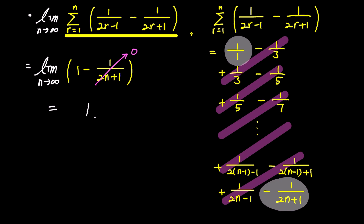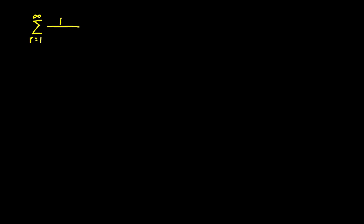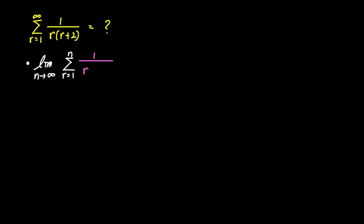Let's explore a slightly different example. This time, let's examine the sum of 1 over r times r plus 2 as r goes from 1 to infinity. Similar to the previous method, we'll find the sum from r equals 1 to n, then apply the limit as n approaches infinity. Furthermore, we'll use partial fraction decomposition to separate 1 over r times r plus 2 into two distinct fractions.